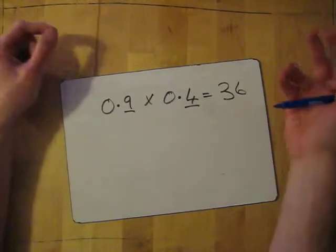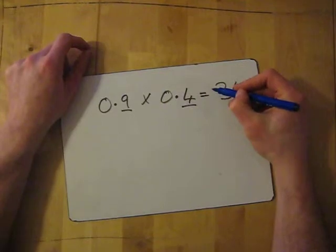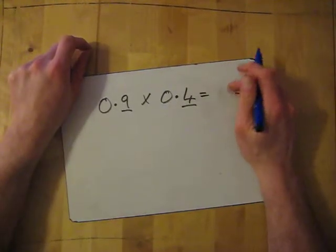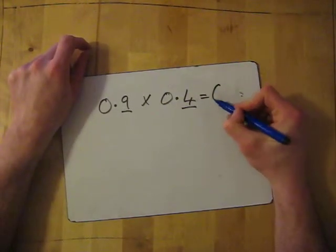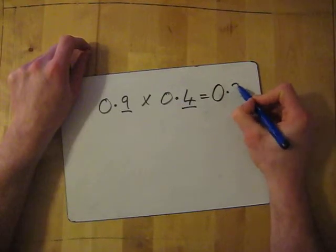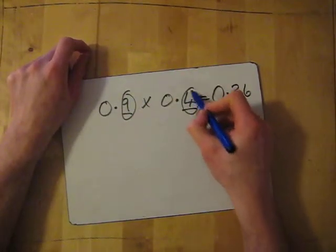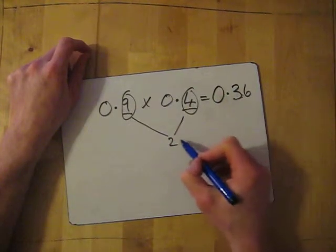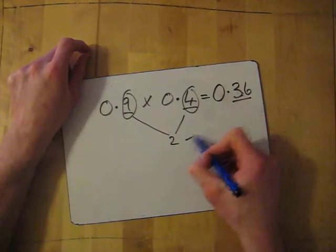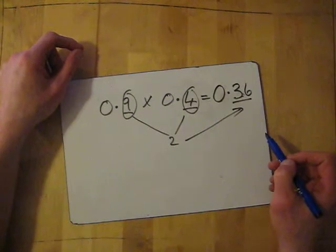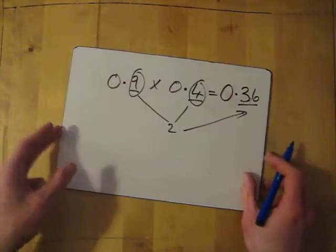So in my question, I have to have 2 numbers after the decimal. So in that case, I'm going to rub this out, it will be 0.36. So I've got 1 number here, 1 number here, which gives me the 2 decimal places, which then links into the 2 decimal places in the answer. Okay? Simple.